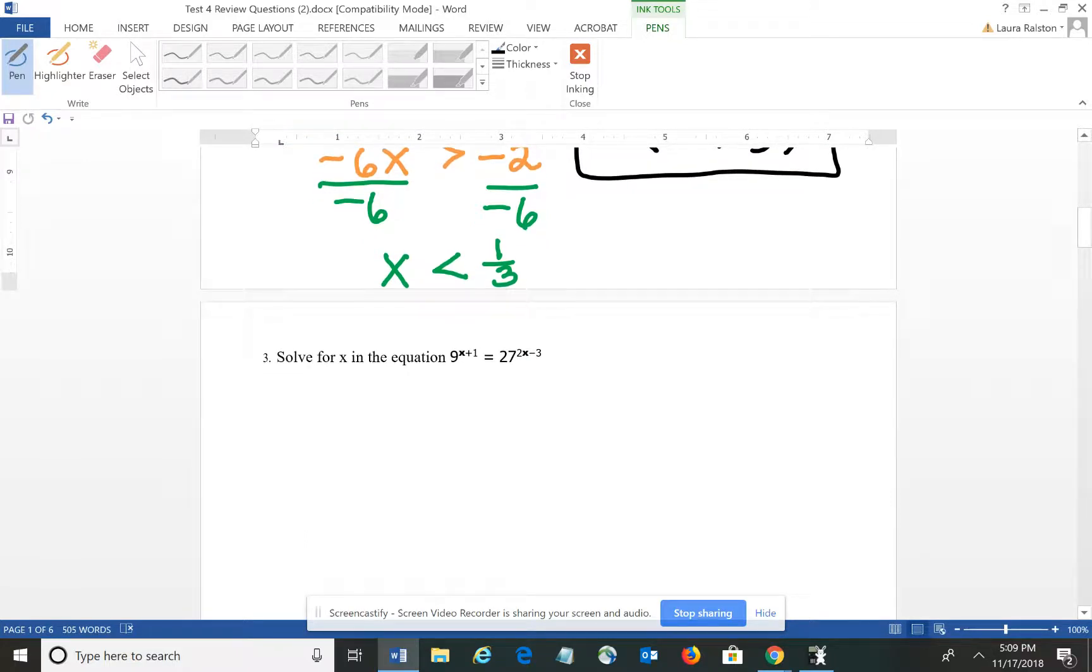The third question asks you to solve for X in the equation 9 raised to the X plus 1 power equal to 27 raised to the 2X minus 3 power. This is an exponential equation because your variables are in the exponents, and it's kind of obvious that you don't have logs. There's different ways for solving exponential equations.